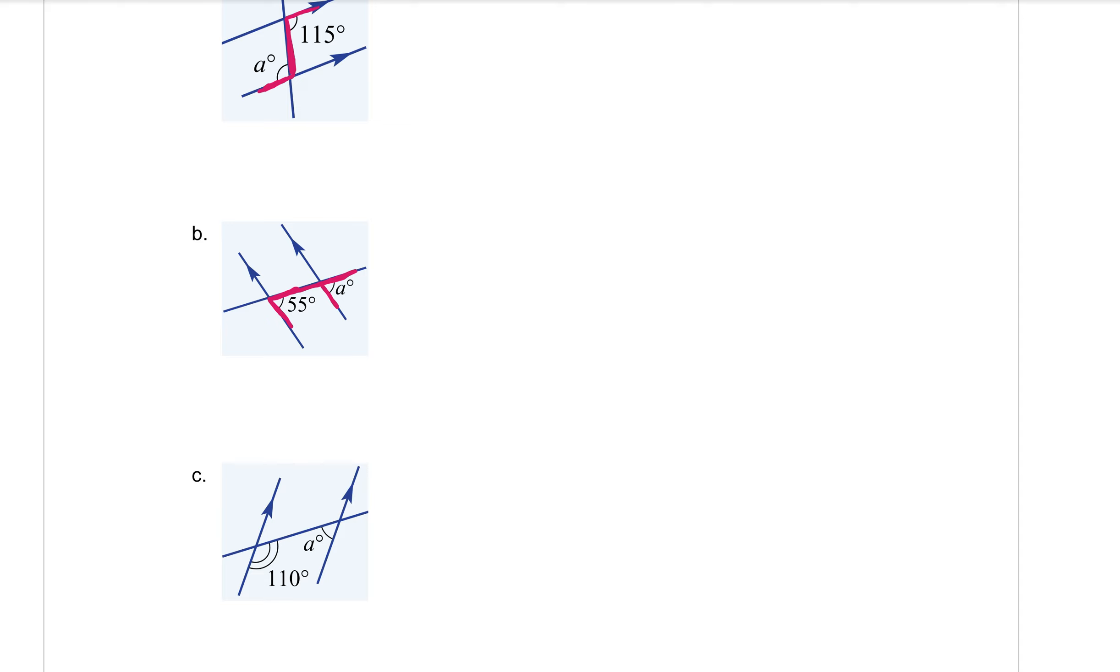So again, A is going to be equal to that 55 degrees. The reason is corresponding angles, which we can shorten to corresp angles. Don't just shorten to co because then we have a third one. Remember that also starts with co. So corresp please. Corresp angles. And that means that those angles are equal. And that's done.